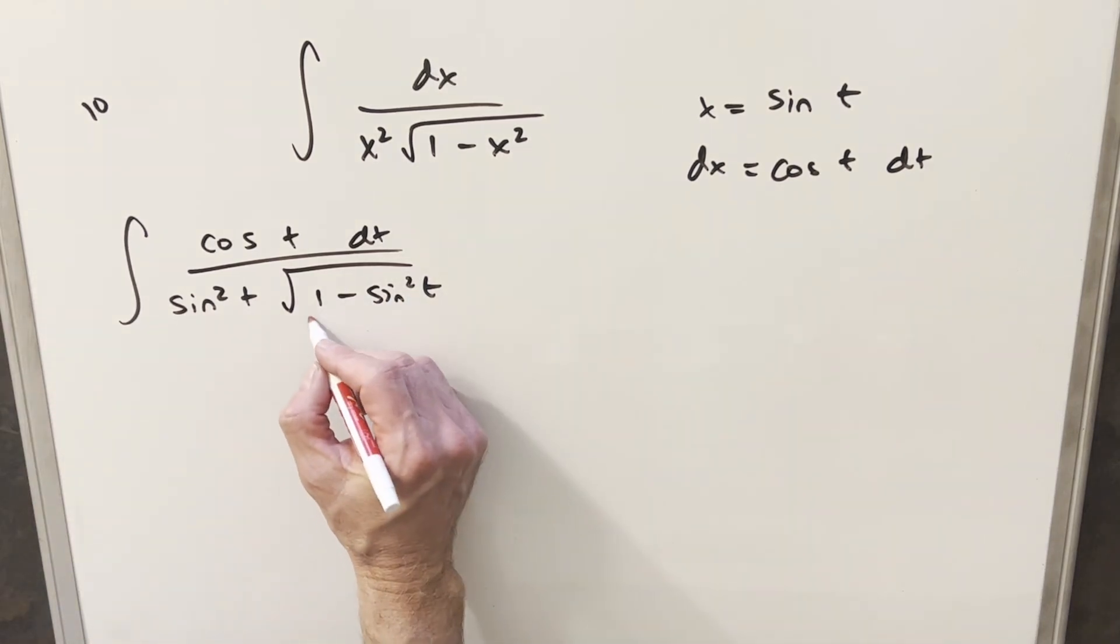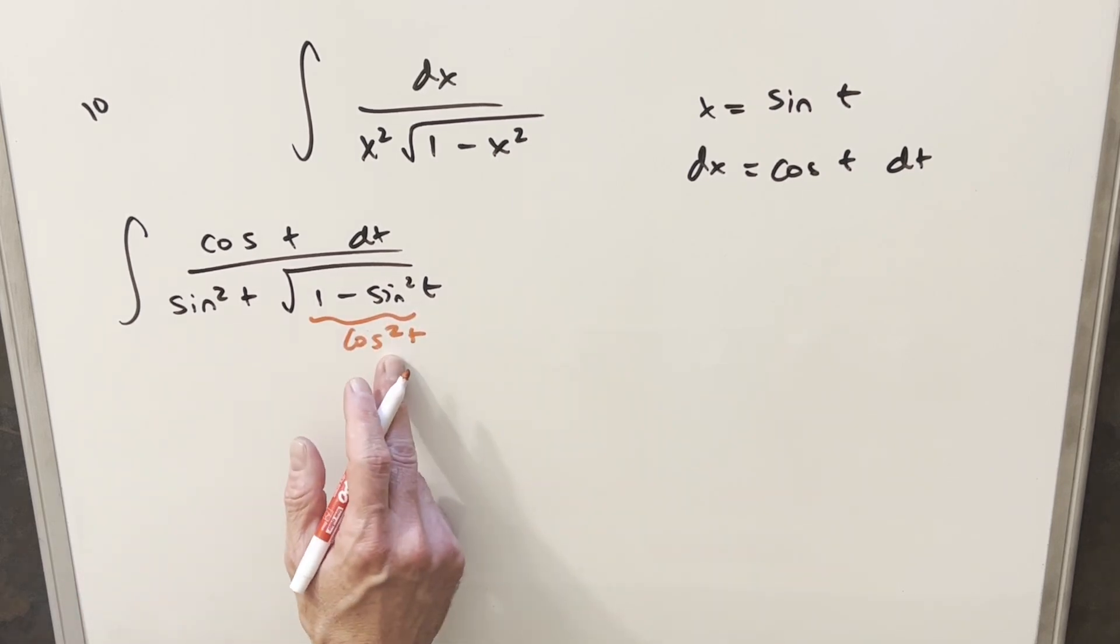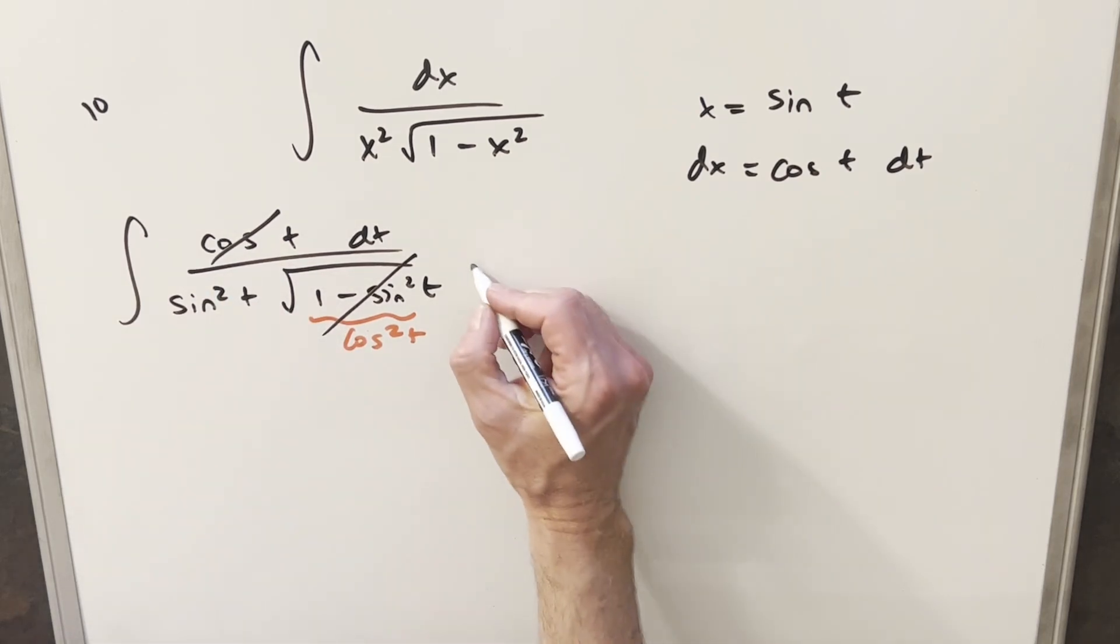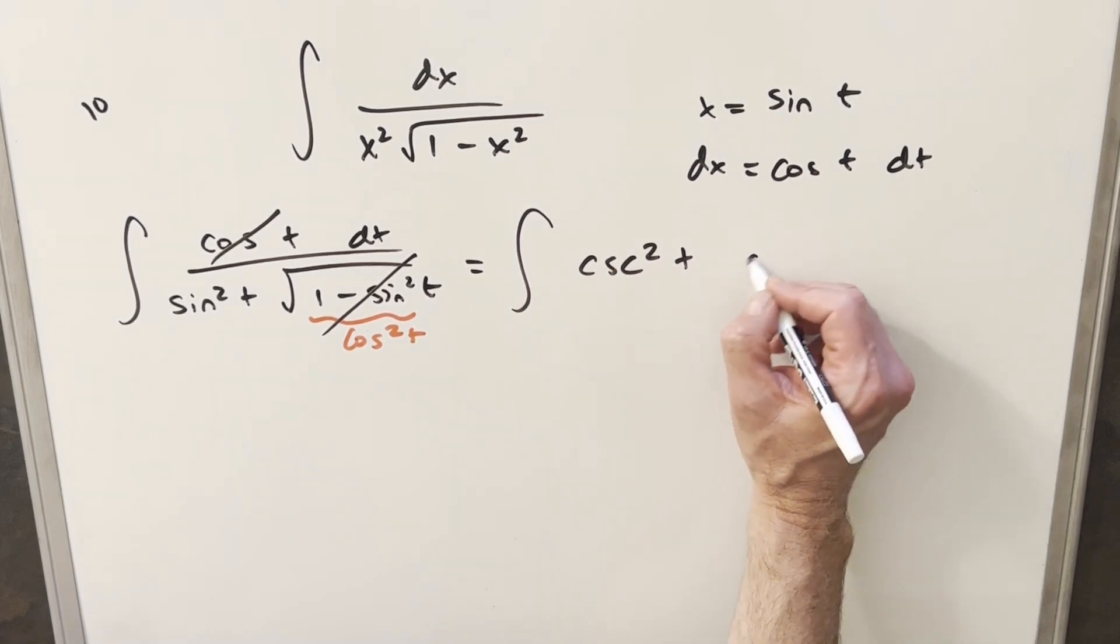Well, 1 minus sine squared t, this is the same thing as cosine squared t. It's inside the square root. So when we take the square root of this, we end up with cosine of t. And so what's going to happen is this whole thing is going to cancel with this here. And then we're left with just 1 over sine squared t. But I can actually write that as cosecant squared t dt.